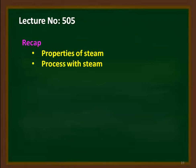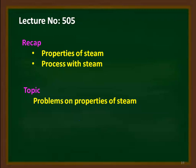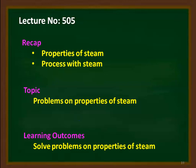In the earlier lecture, we discussed the properties of steam, the various processes with steam, and we solved a few problems on properties of steam and processes of steam. We will continue here with the problems and solve a few more problems on the properties of steam. The learning outcome: at the end of the lecture, the student will be able to solve problems on the properties of steam.